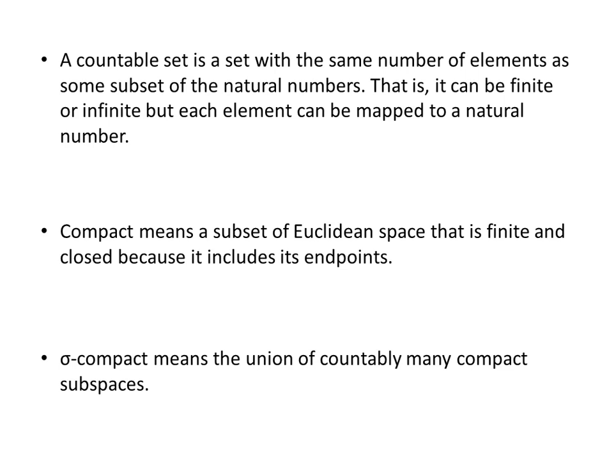A countable set is a set with the same number of elements as some subset of the natural numbers — the counting numbers 1, 2, 3, 4, 5. That is, it can be finite or infinite, but each element can be mapped to a natural number, so it's countable. Compact means a subset of Euclidean space that is finite and closed because it includes its end points. Sigma compact means the union of countably many compact subspaces.